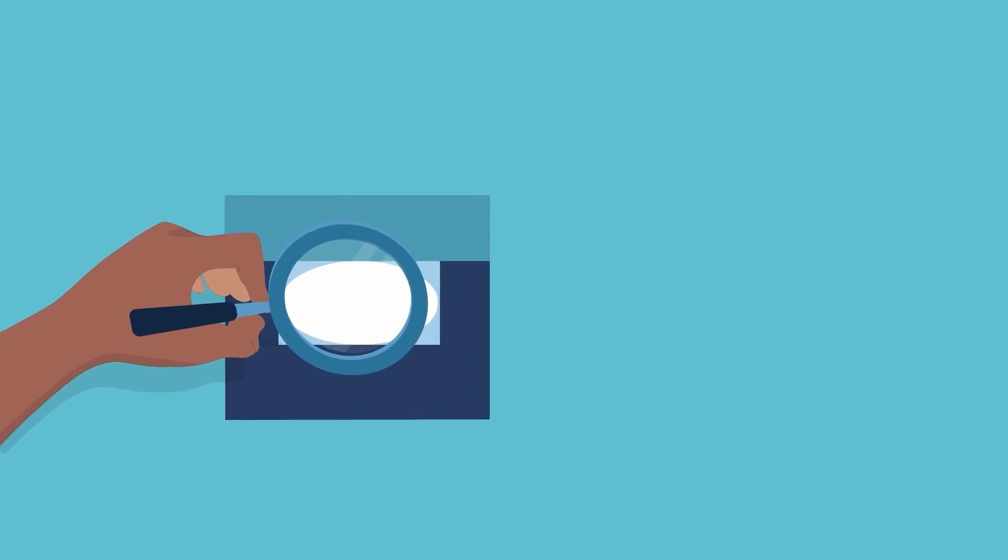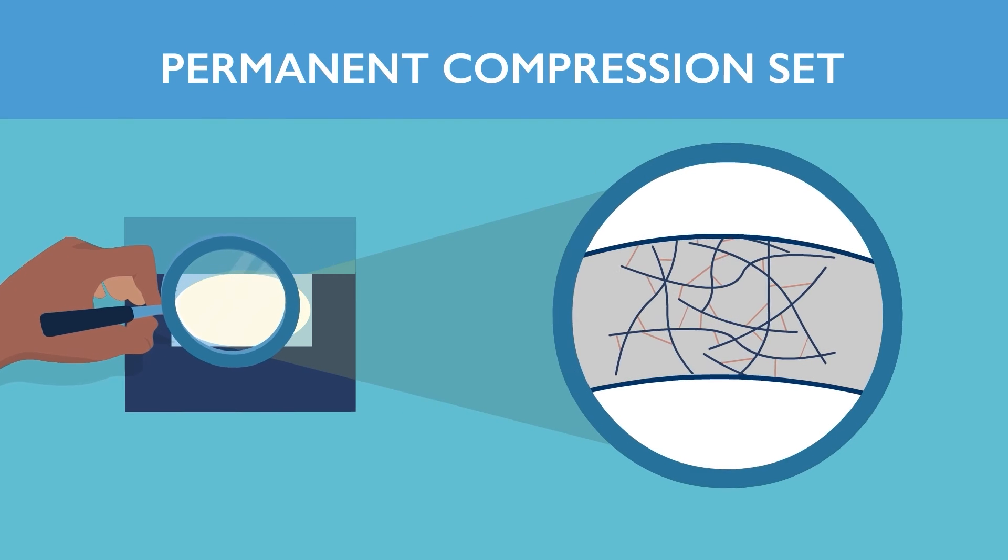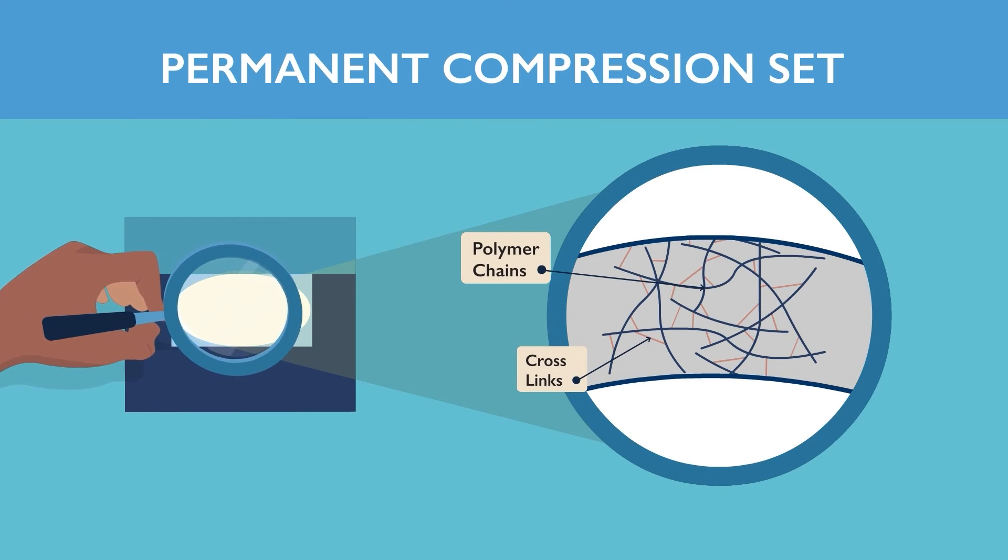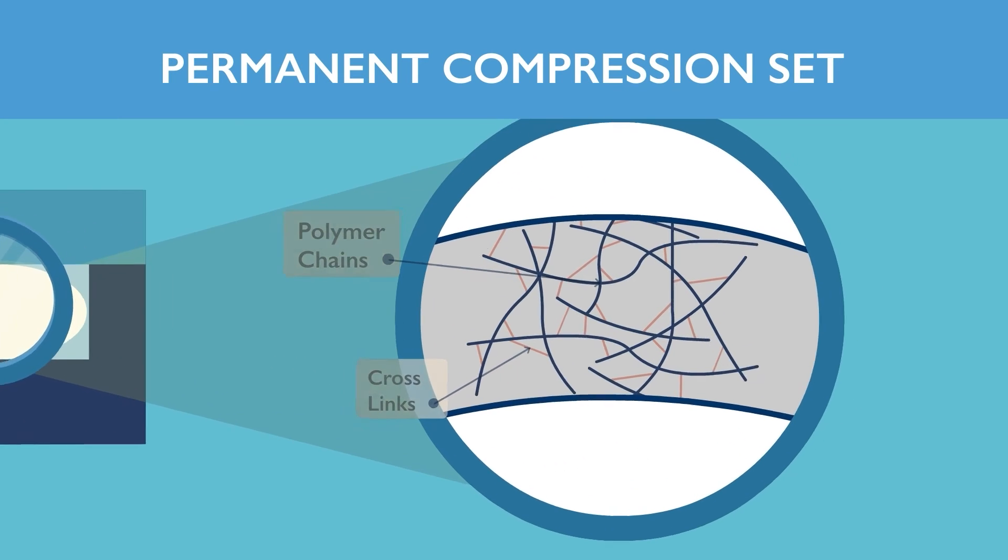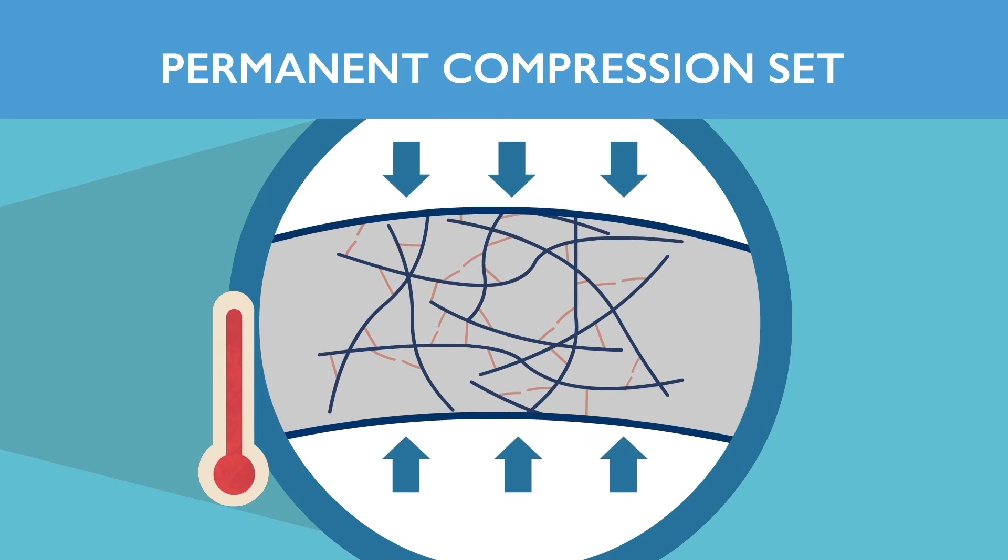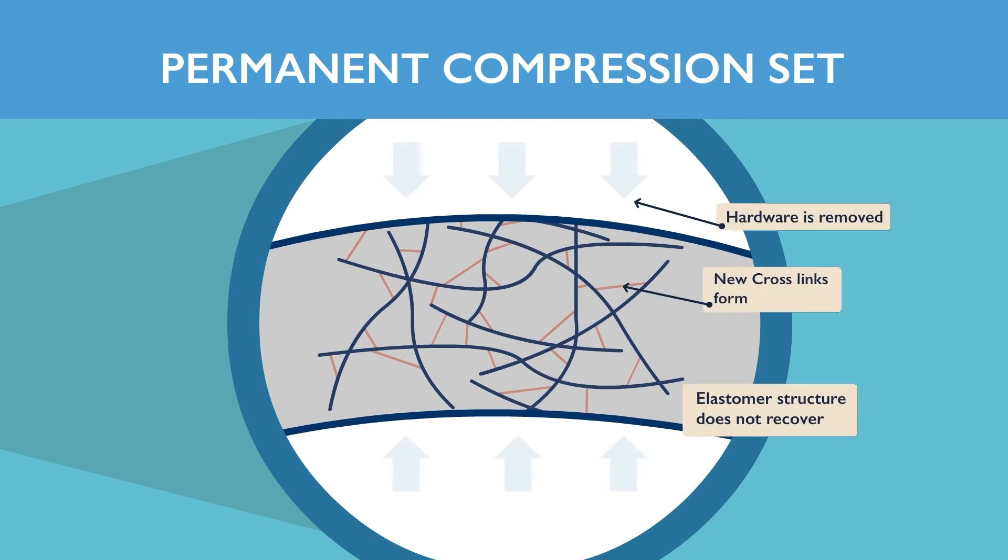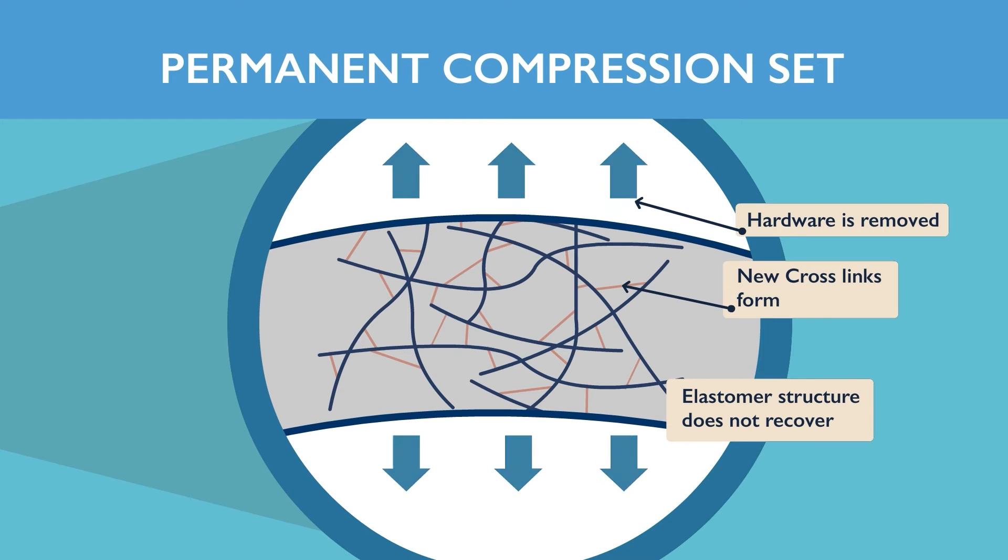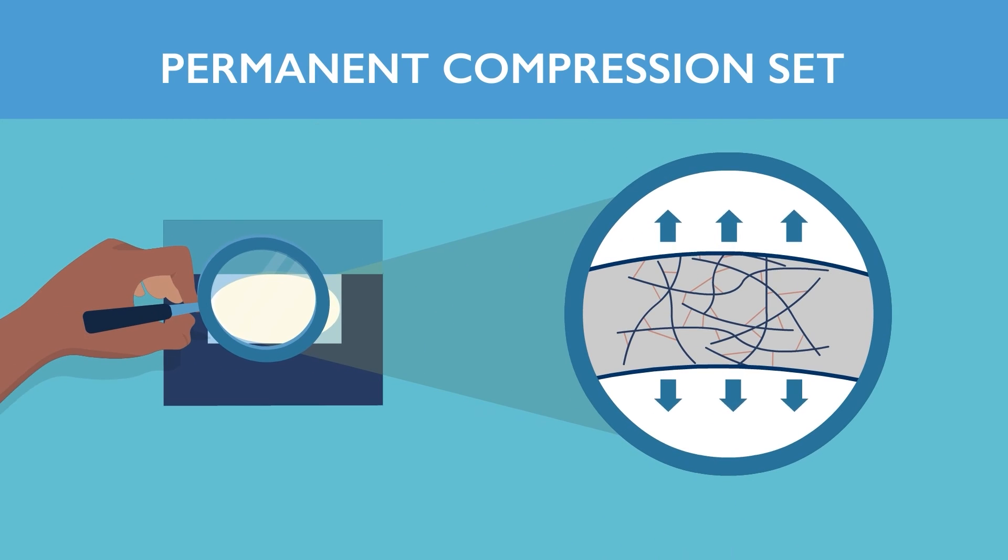Let's first look at permanent compression set. In permanent compression set, the elastomer sample is compressed under heat and either to the point where crosslink bonds can break and reform in the compressed state, or completely new crosslinks can form. This is unrecoverable compression set leading to permanent reduced sealing force and sealing efficiency.